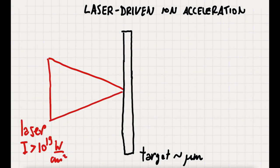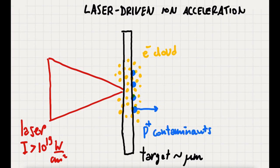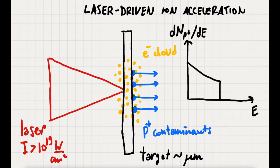The interaction process leads to the generation of a high-energy electron cloud. This, in turn, leads to the onset of a strong longitudinal charge separation, which ultimately accelerates the protons located as contaminants at the back surface of the target, with an exponential-like energy spectrum and cut-off energies of the order of tens of MeVs.